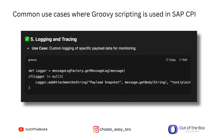Fifth, custom logging and tracing. If you want to improve observability or the logging of specific fields, you can use Groovy scripting to log specific fields, headers, or even entire payloads or snapshots of the payload for debugging and monitoring.